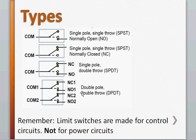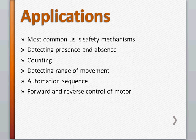This one is a double pole double throw switch. You have two COM contacts, two NO, two NCs. Now remember that these limit switches are made for control circuits. They are not made for heavy current passes through, so they are not made for power circuits. That's a very important thing to remember.